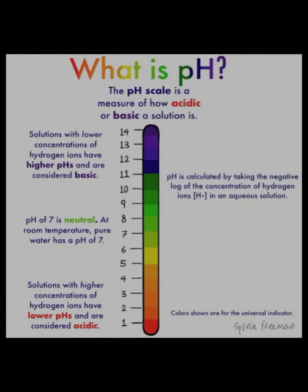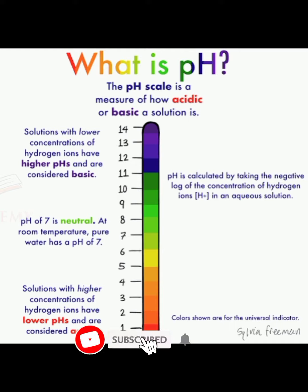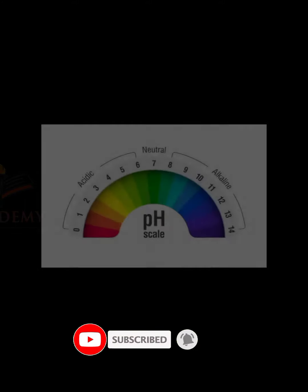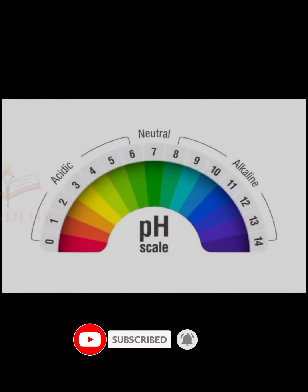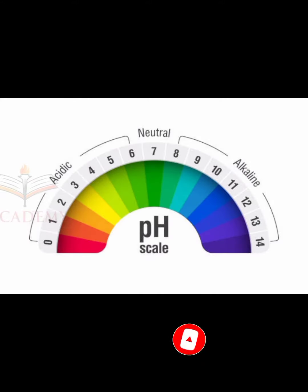pH is a measure of how acidic or basic a chemical is when it's in aqueous, water, solution. A neutral pH value, neither an acid nor a base, is 7.